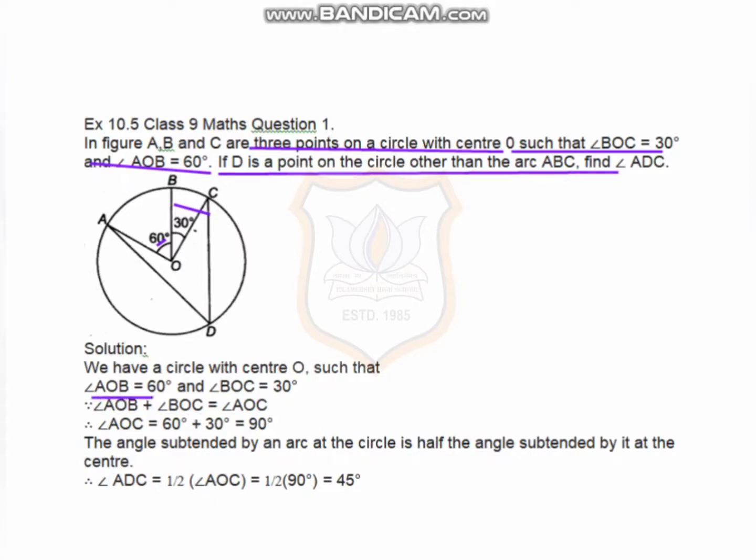We know that AOB is 60 degrees given, and BOC is 30 degrees. AOB plus BOC equals AOC, so AOC equals 60 plus 30 which equals 90 degrees.